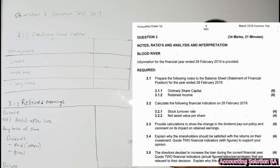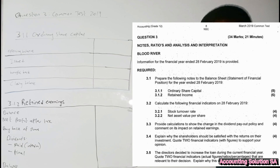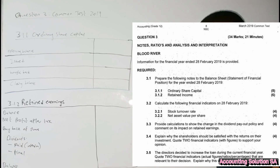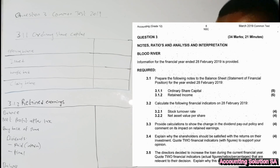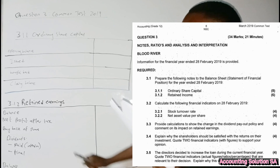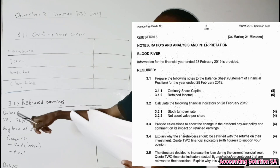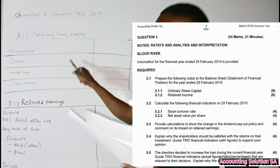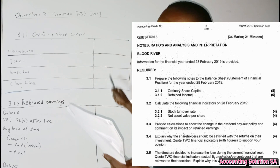Let's read the required section. Required 3.1: prepare the following notes to the balance sheet — statement of financial position — for the year ended 28 February 2019. 3.1.1 ordinary share capital and 3.1.2 retained income. That's eight marks and six marks — a lot of marks. So let's start with ordinary share capital. The format: you start with opening balance, indicate how many shares on this side, multiply by amount, then you get the balance.